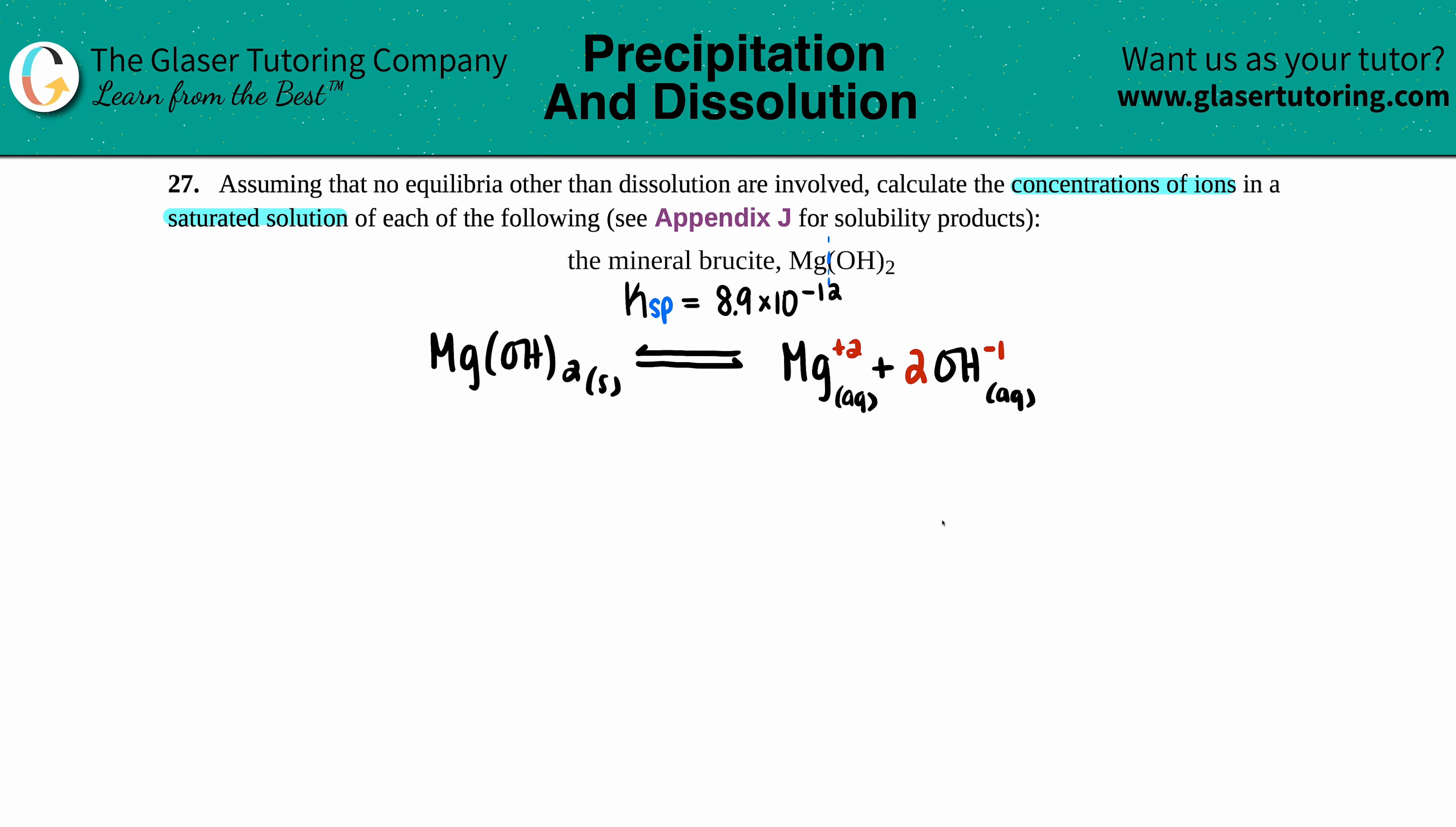Now let's write the general Ksp equation. The general Ksp equation is just equal to the concentration of the products raised to their coefficients—no reactants because no solids allowed. So Ksp equals the concentration of magnesium (that's 2+) times the concentration of hydroxide.